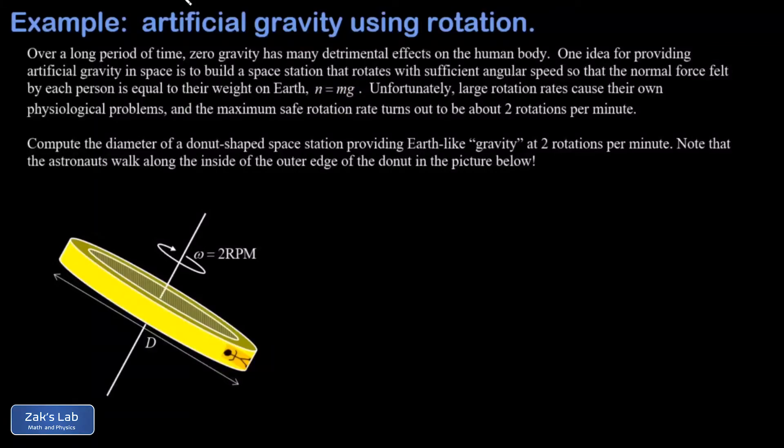In this video, we're looking at a classic idea for how we might create artificial gravity on a space station. The idea is that the astronauts live inside a giant rotating donut.